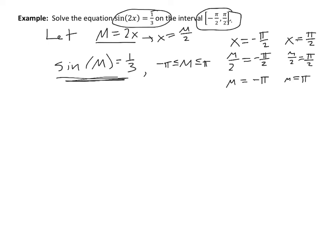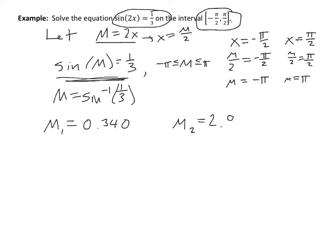Now I solve sine m equals 1/3 using the inverse sine. My calculator gives m₁ ≈ 0.340 and m₂ ≈ 2.80. Both of those are within the m interval of negative π to π. Adding or subtracting 2π to either would take us outside those bounds, so these are the only two solutions in terms of m.